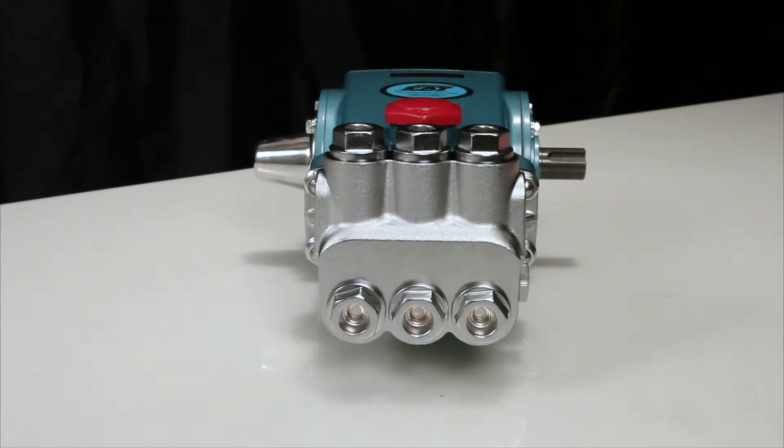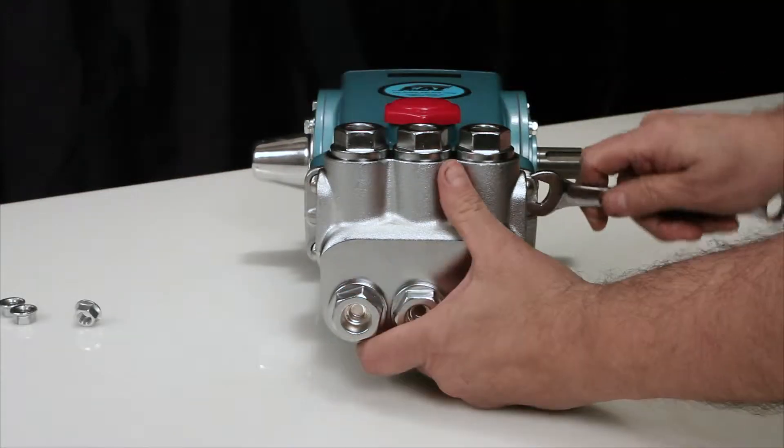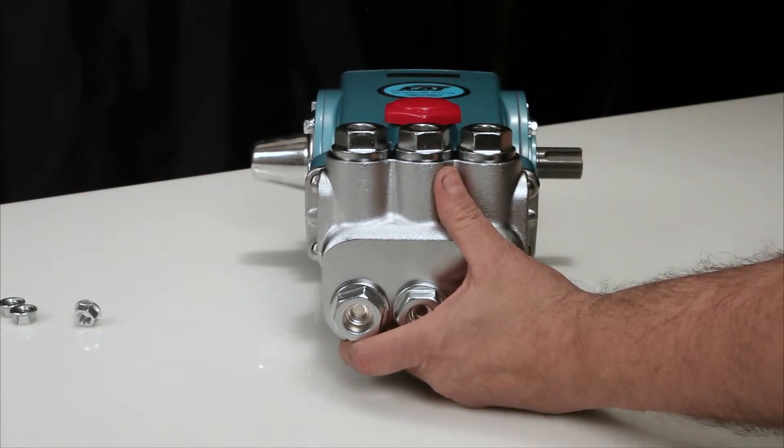To service or repair the seals, begin by removing the manifold. To remove the manifold, begin by removing the four flange nuts using a 14mm wrench.